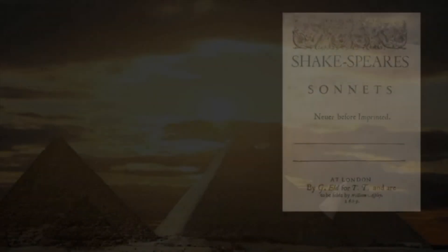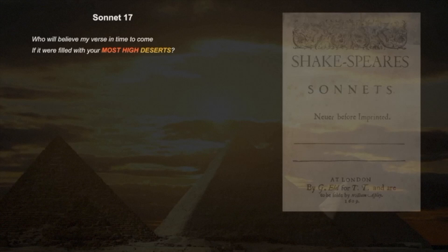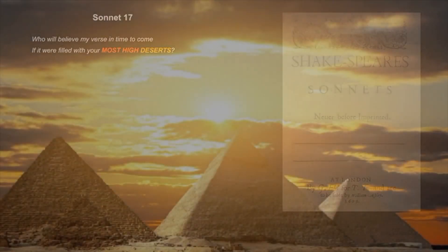The first two lines of Sonnet 17 are: Who will believe my verse in time to come if it were filled with your most high deserts? What was the most high building in the world during the Renaissance? In fact, for the prior 4,000 years at least. The Great Pyramid, of course. And where was it? Well, in the largest desert known to man at that time, the Sahara.